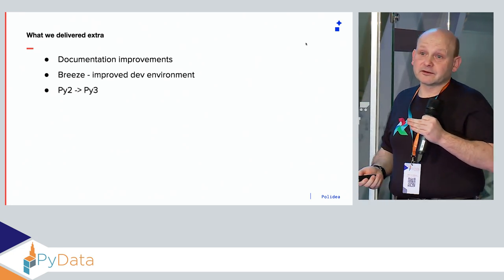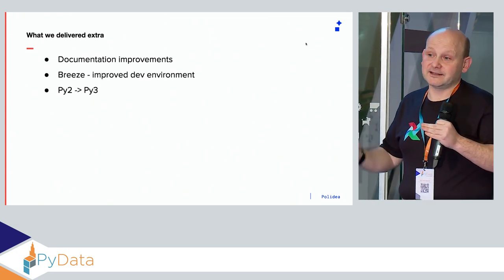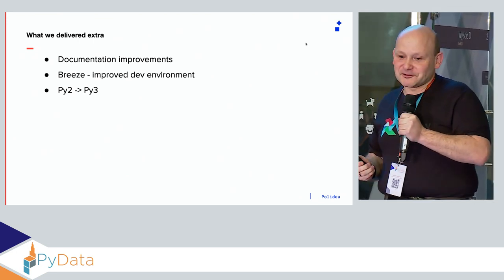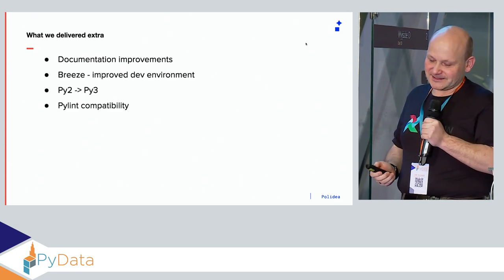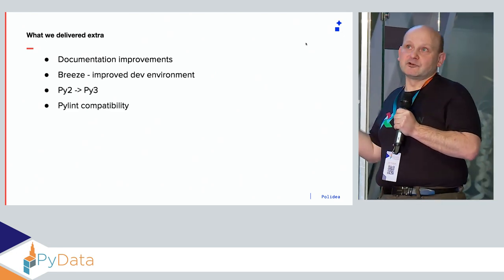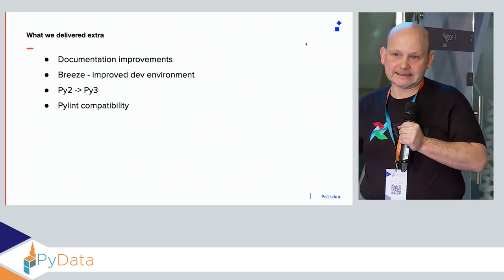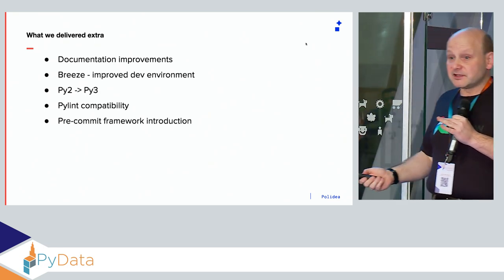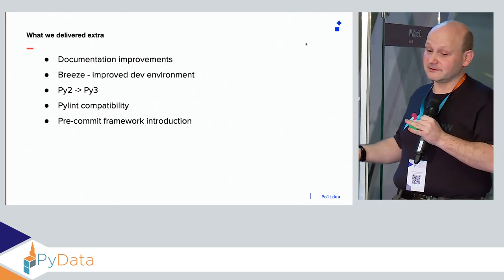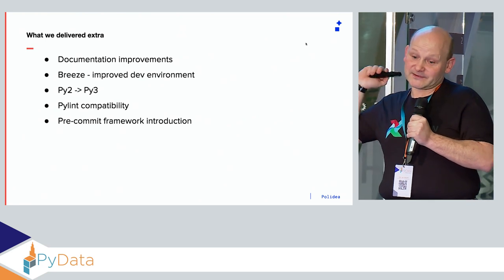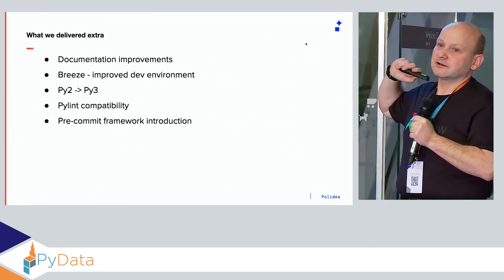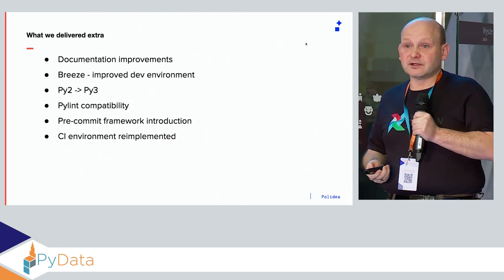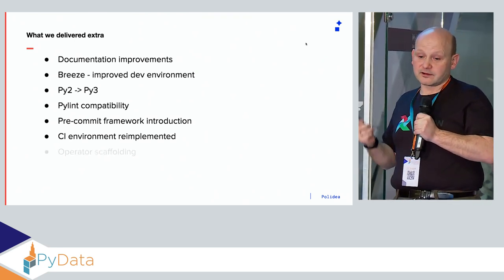We helped migrate to Python 3 — new Airflow 2.0 is Python 3 only. We have three weeks to go until Python 2 end of life. We've implemented PyLint and continuing to improve PyLint compatibility and code quality testing. We introduced the pre-commit framework — if you don't use pre-commit.com, you should. And we re-implemented the whole CI continuous integration environment.